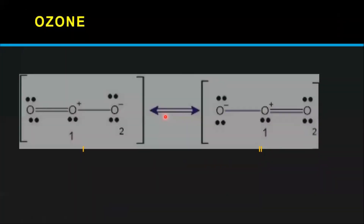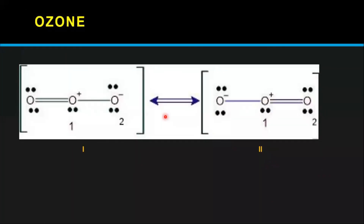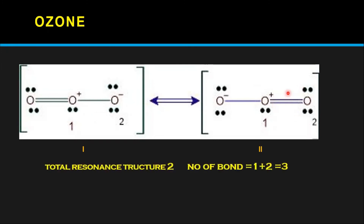Next, ozone (O₃). Ozone has two resonance structures. The first structure has 1 bond at the fixed position, and the second has 2 bonds — so the total number of bonds is 1 + 2 = 3. Bond order = 3 divided by 2 = 1.5. Like benzene, ozone also has a bond order of 1.5.